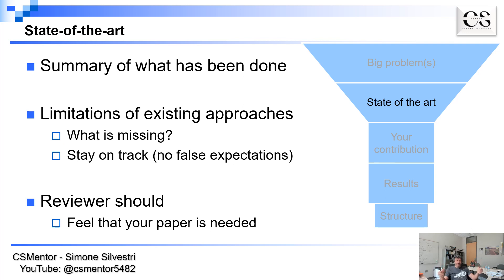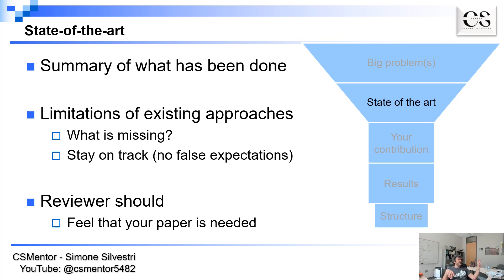After you describe the problem you want to study, you need to say what has been done in previous papers related to this issue and why what has been done is not sufficient and can be improved — basically why you need this paper. You need to summarize the state of the art. You cannot write a full column of state of the art, because there's going to be a related work section for that, but you want to guide the reader and reviewer towards the problems not addressed in the current literature that you are addressing in this paper.